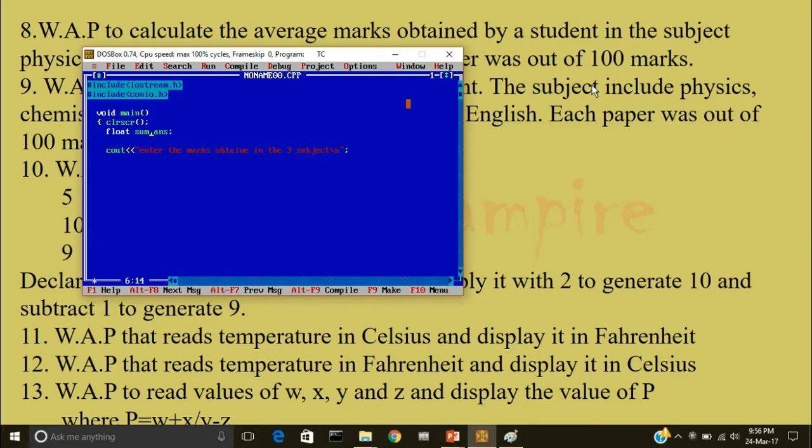Now I'll create more 3 memory locations. First of all, marks in physics, chemistry, mathematics. Keep the mark in the memory location called p, then c, then m.